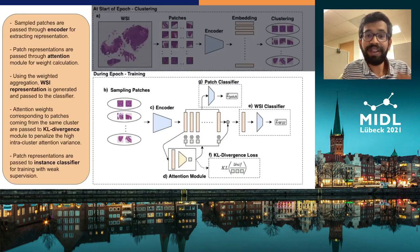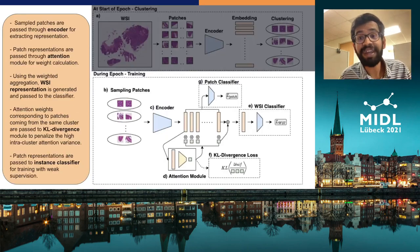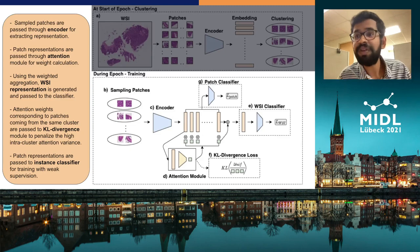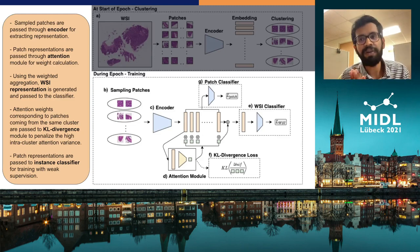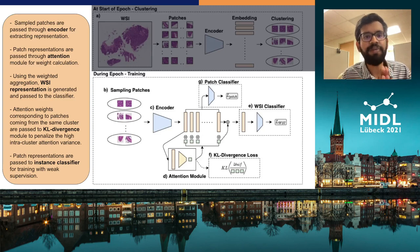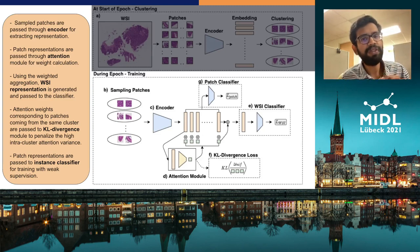Once sampling is done, we use these patches for end-to-end training. During each epoch, we use a ResNet-18 model for generating patch representations, followed by attention-based aggregation to obtain a WSI-level representation, followed by a linear layer for WSI prediction. Cross-entropy loss at the WSI level is used for performing training.